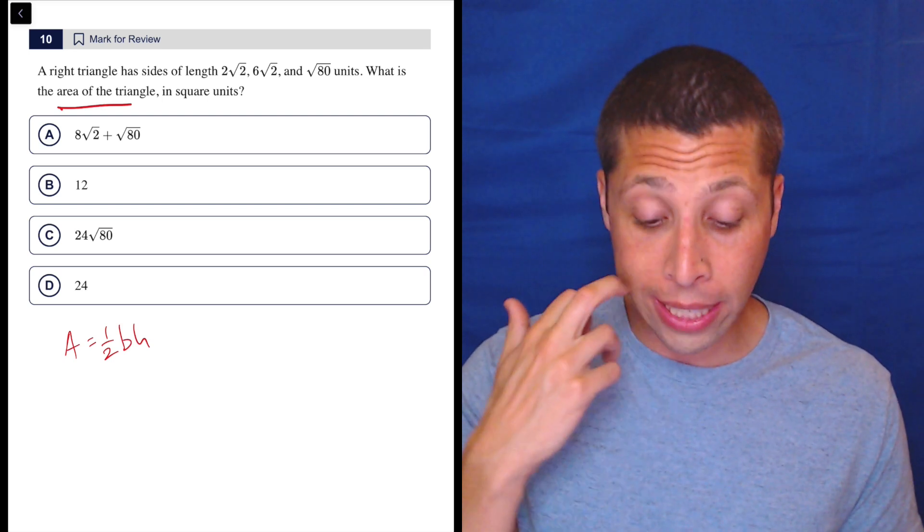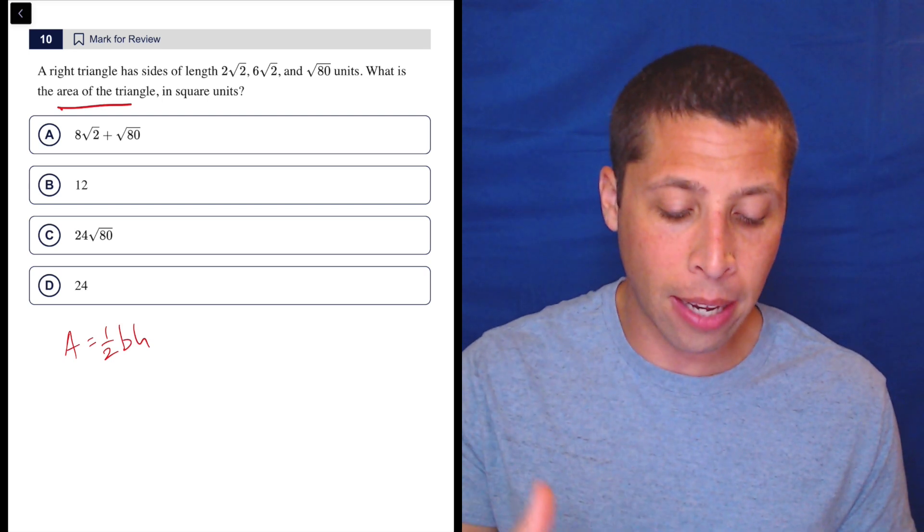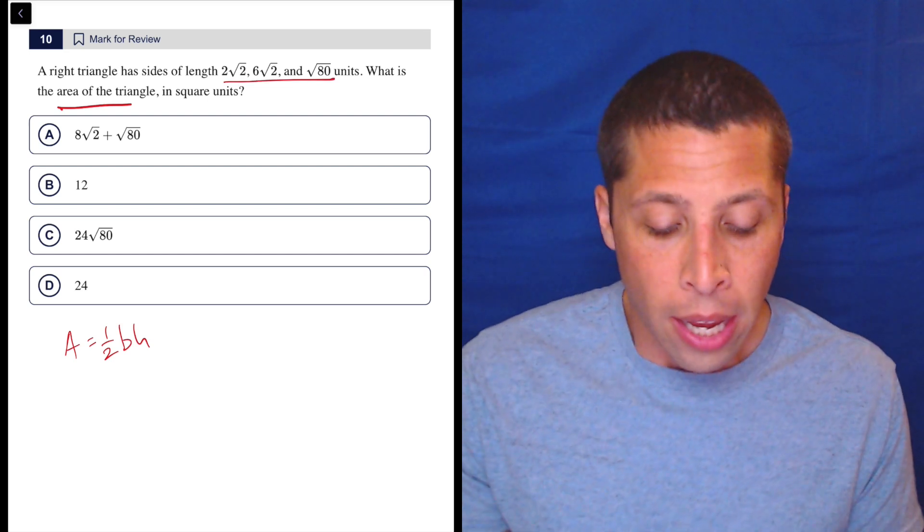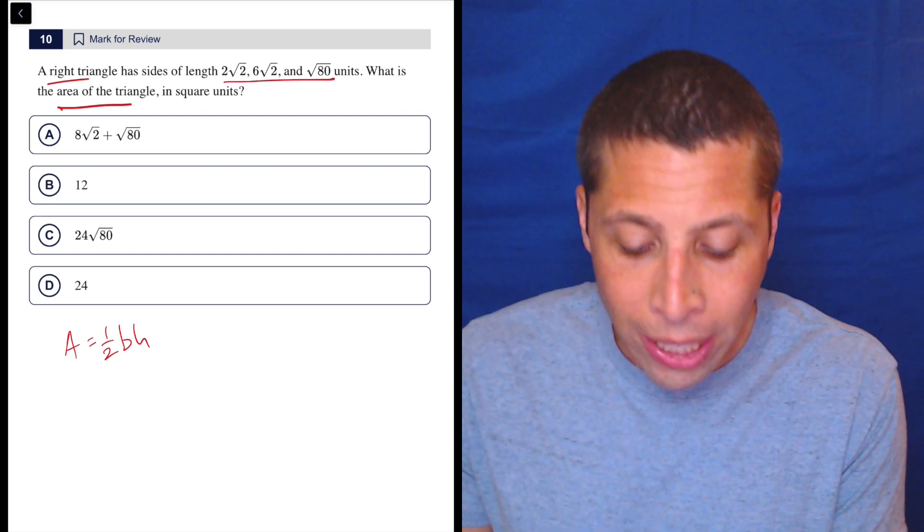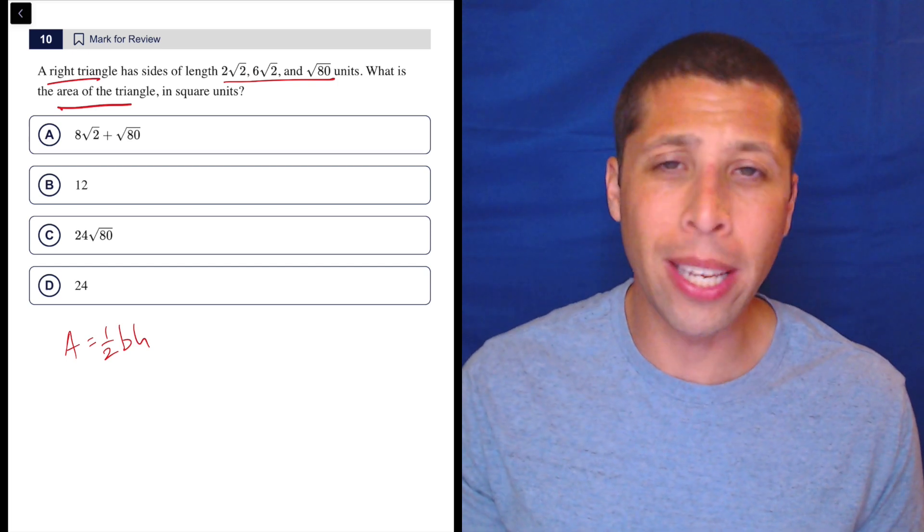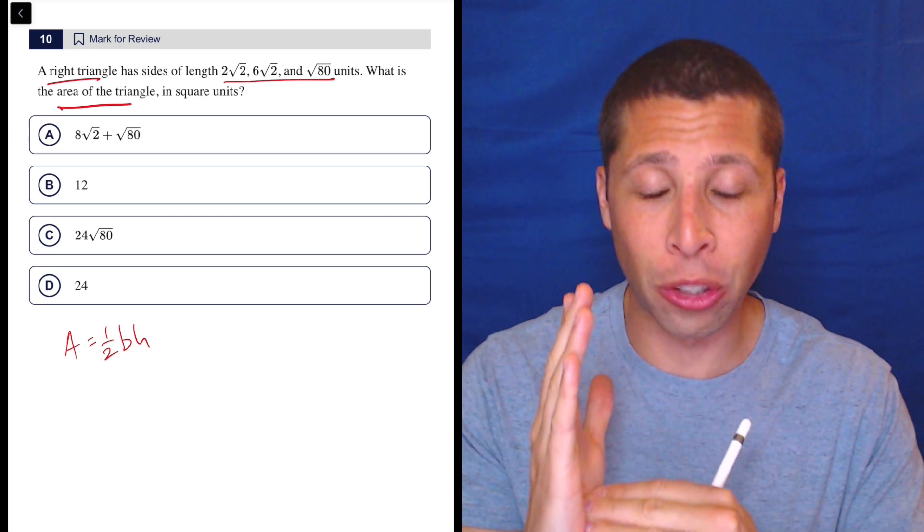But you can see here in order to get the area, we only need two sides, the base and the height. And we have three, right? So they're going to make us make a choice which ones to use. So because it's a right triangle, we have an advantage. In order to use this formula, we need to have a right angle. So we need to get two sides to be perpendicular to each other.